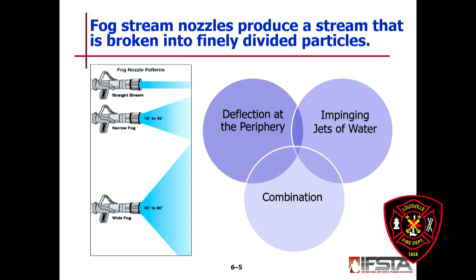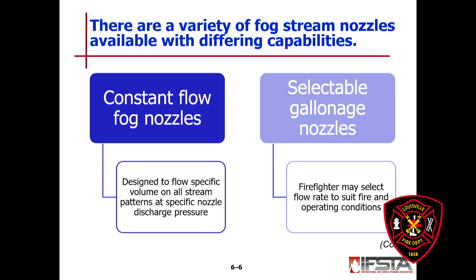Fog stream nozzles produce a stream that is broken into finely divided particles. As you adjust the flow pattern from a straight stream to a narrow stream to a wide stream, the impinging jets of water come into effect — the more you widen the fog, the more the rubber teeth and deflection play a role. Be aware of that as you operate or select the stream you want to use.